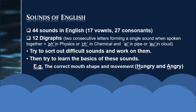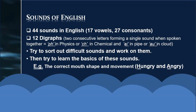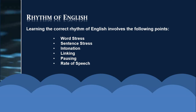We also have digraphs in English. A digraph means two consecutive letters forming a single sound when spoken together. For instance, 'p' and 'h' create an 'f' sound, as in 'physics.' 'C' and 'h' create a 'k' sound, as in 'chemical.' Vowels can also work together to create one sound, as in 'pipe' and 'cloud.' You need to sort out different sounds and work on them. The correct mouth shape and movement creates a meaning difference — for example, 'hungry' versus 'angry' have different sounds.